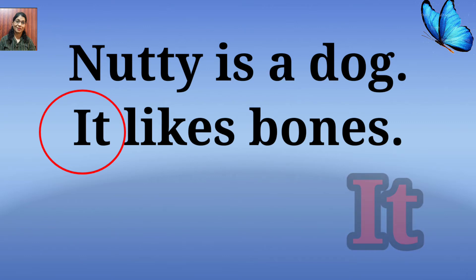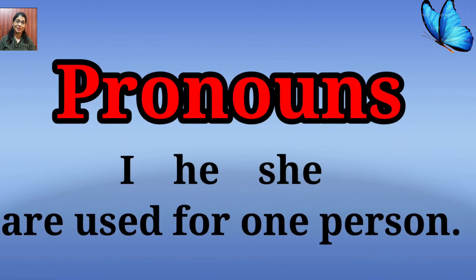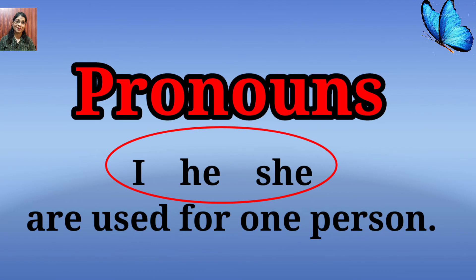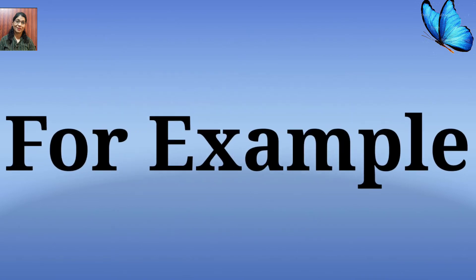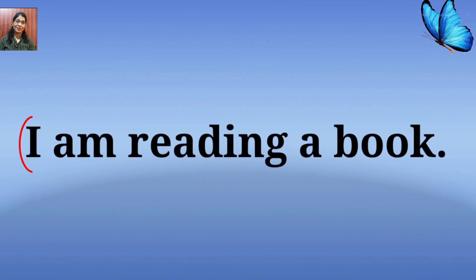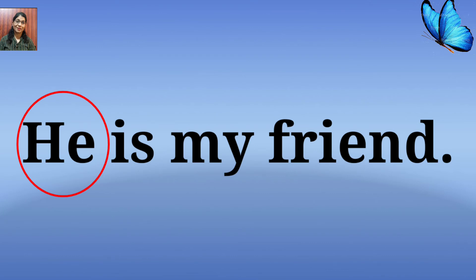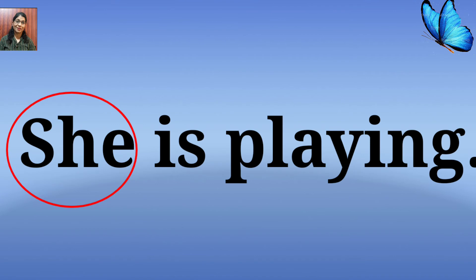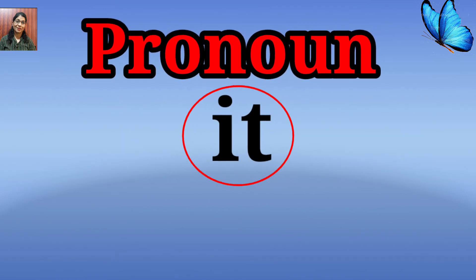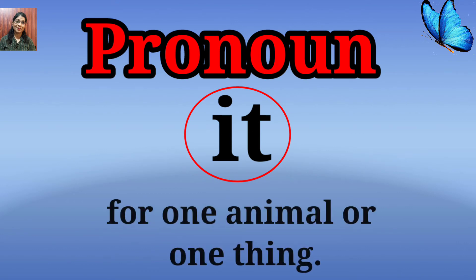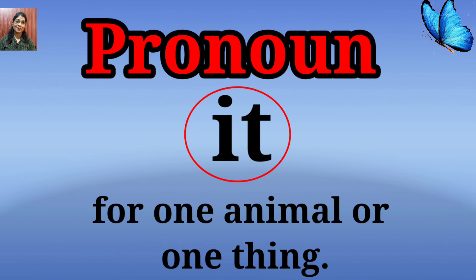Nutty is a dog, it likes bones. Here, 'it' is the pronoun used in the place of Nutty. Pronouns I, he, and she are used for one person. For example: I am reading a book. He is my friend. She is playing.